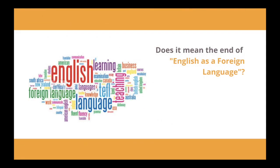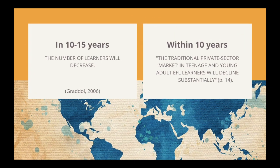All of these changes could mean that English as a foreign language could cease to exist. Graddol claims that in 10–15 years the number of English learners will decrease, as will the private sector market for teaching teenagers and young adults. We should also be prepared for speakers of Mandarin and Spanish, who are already challenging English for educational resources and policy attention. Spanish, French, German and Japanese are also growing, and one of them could slowly replace English and become the new lingua franca.